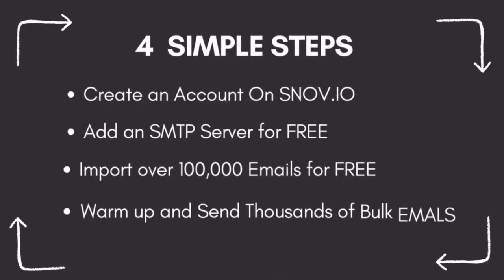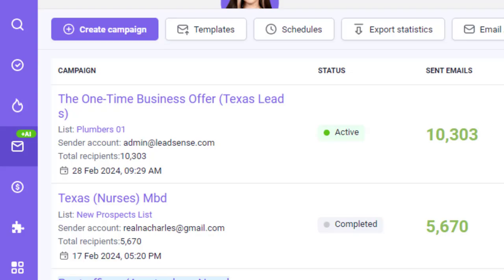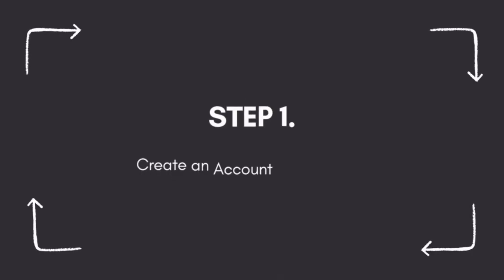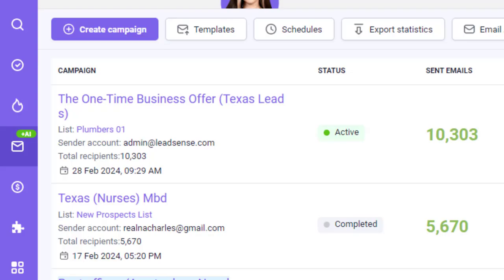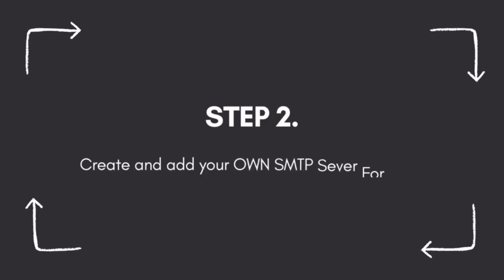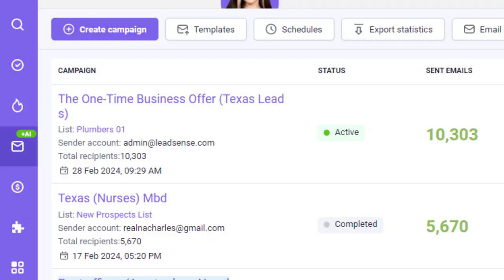There are four steps in this video that I will walk you through that will guarantee you sending over 10,000 emails if you are serious about sending bulk emails every single day. The first step is I'm going to walk you through how you create your own personal snov.io account absolutely for free. The second step is where I'm going to show you how to add your own personal SMTP server for free with your Google account.